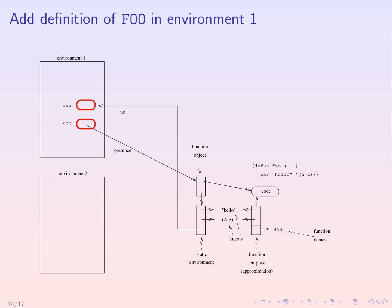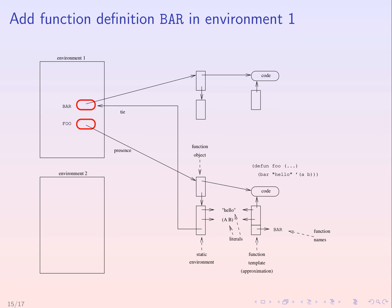The final step of loading the function definition into environment one is to execute set-fdefinition, which makes function foo be defined in environment one. We distinguish this relation by calling it presence — we say that function foo is present in environment one, and in this case also tied to environment one. But those are orthogonal concepts: presence is a relation from the environment to the function object, and tying is a relationship from the function object to the environment. At some later point we might define function bar and load it into environment one, in which case it becomes present in environment one, and from then on executing foo will call bar as expected, indirectly through the function cell for bar.